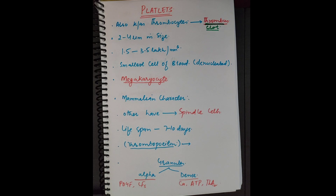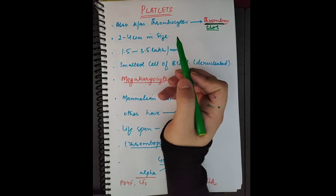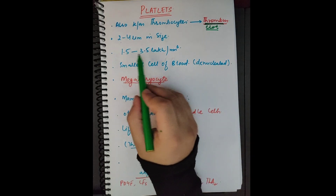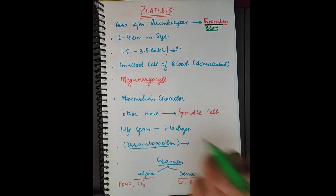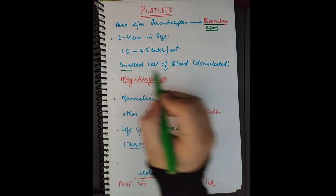Platelets have a normal size of 2 to 4 micrometers. Their normal count is 1.5 to 3.5 lakh per millimeter cube. Comparing with RBCs and WBCs: RBCs are in the millions, WBCs are in thousands, and platelets are in lakhs. So the most numerous are RBCs, followed by platelets, then WBCs.